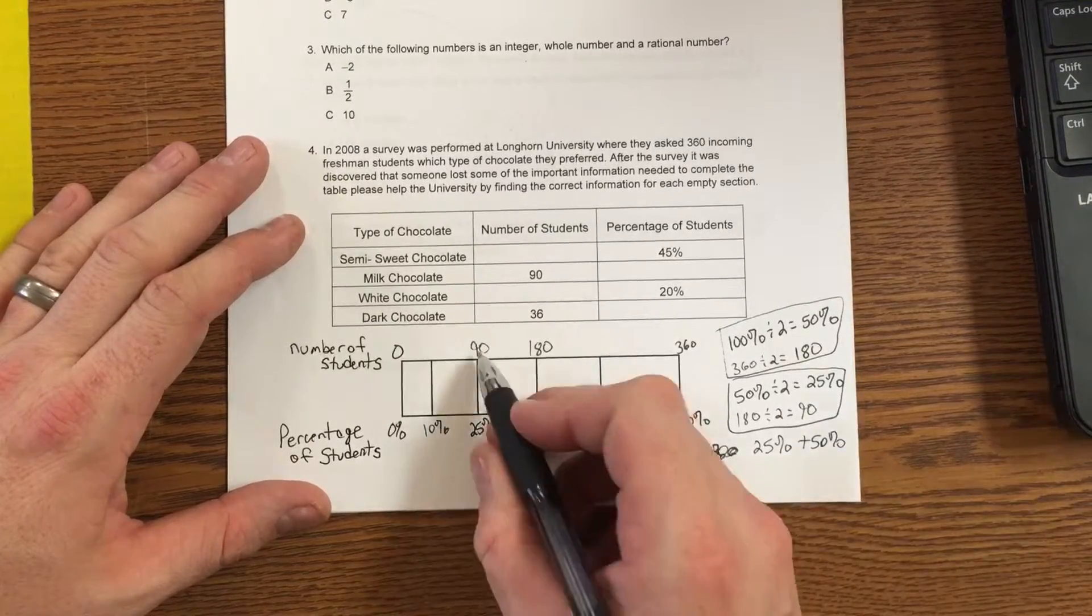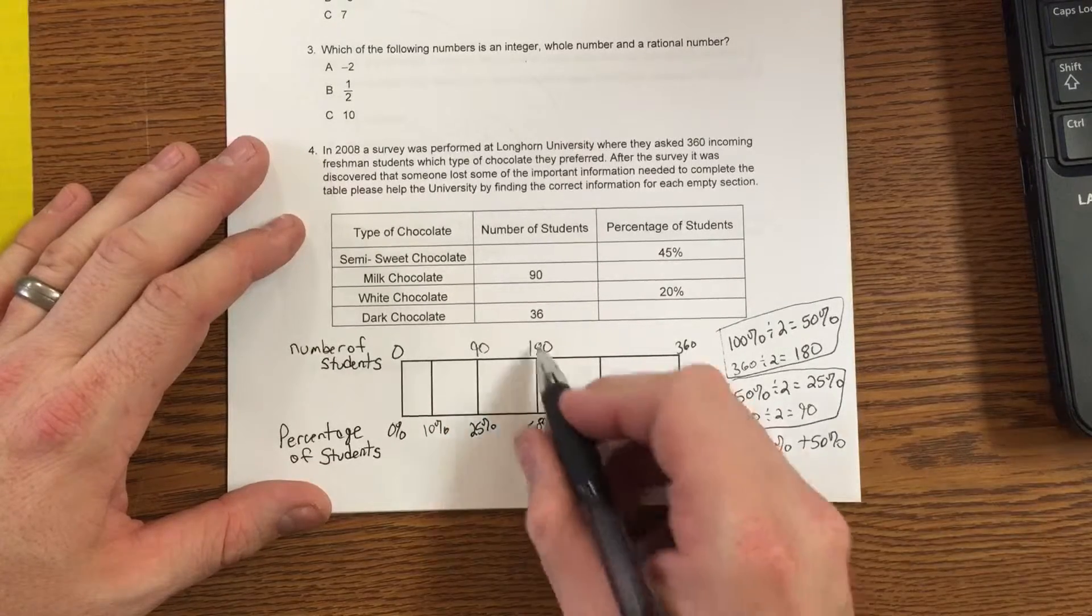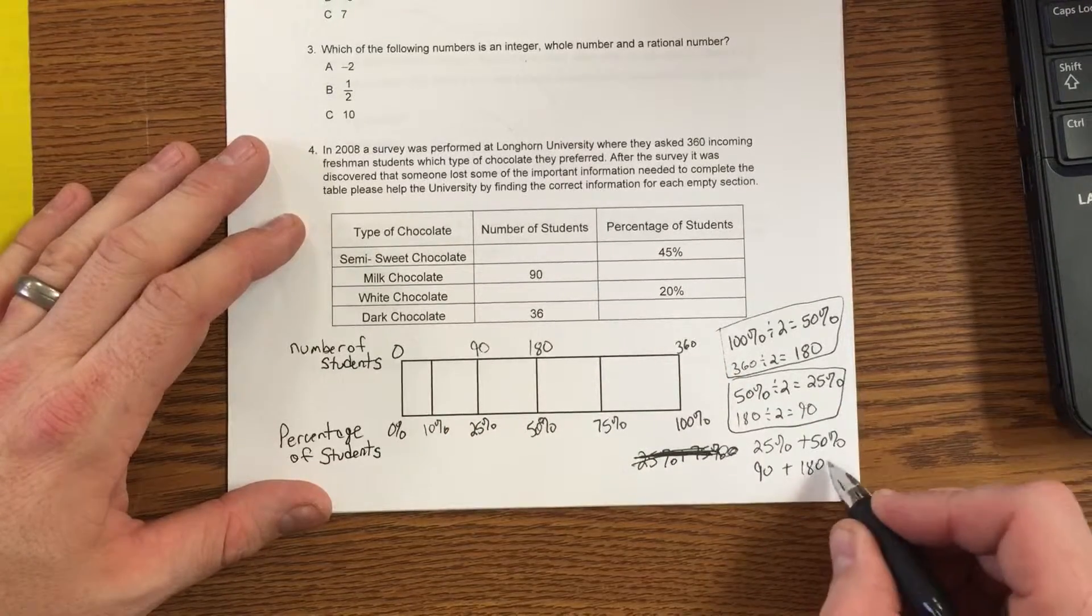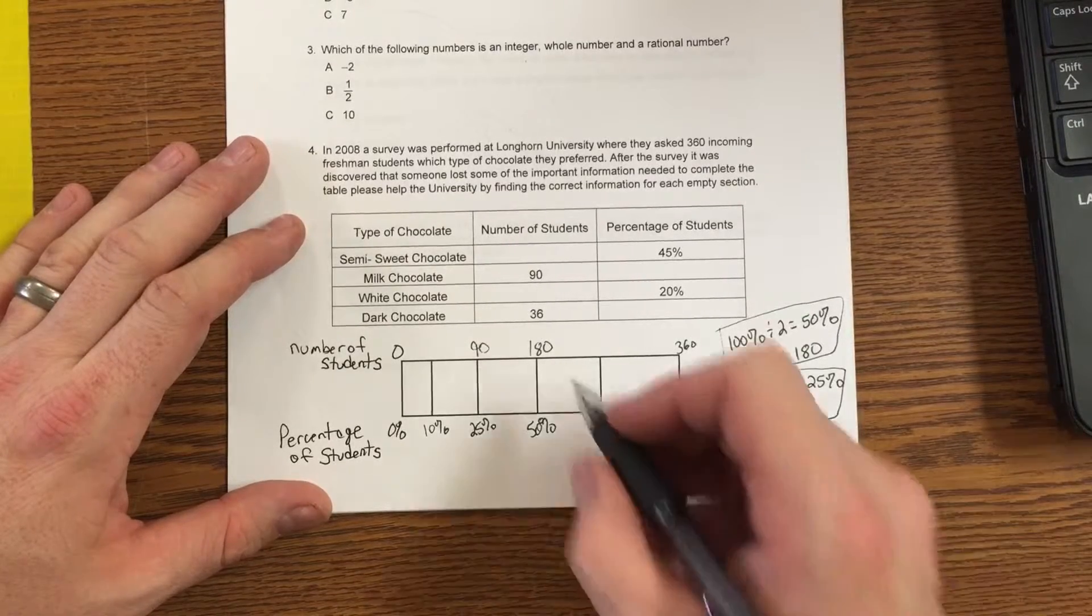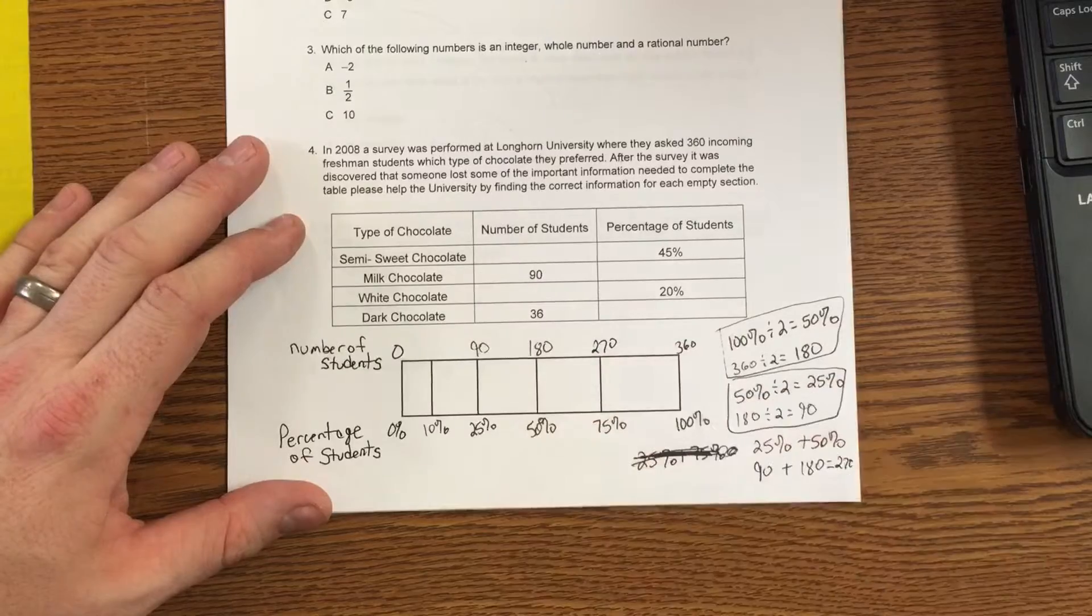So 25 is worth 90. 50 is worth 180. When I add those two together, I get 270. Well, 75% is 270.